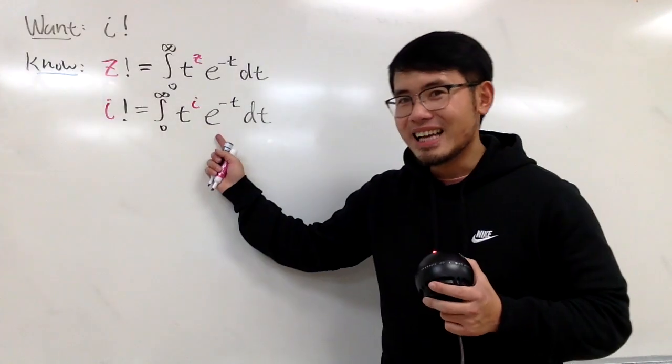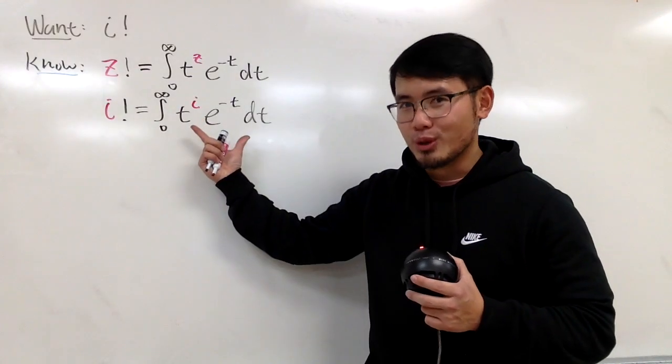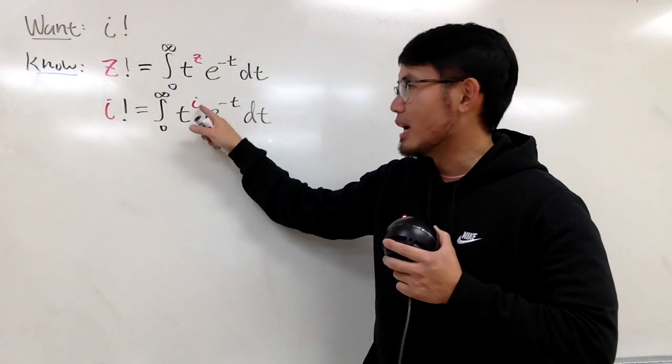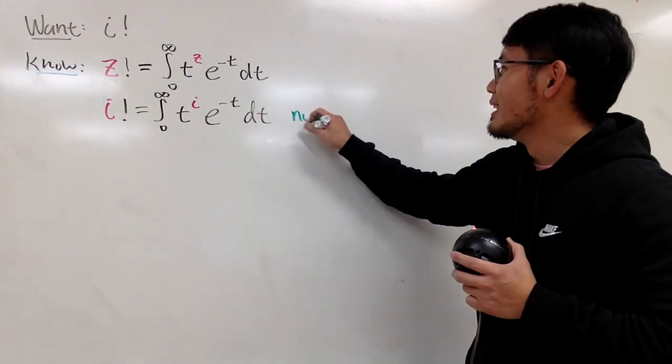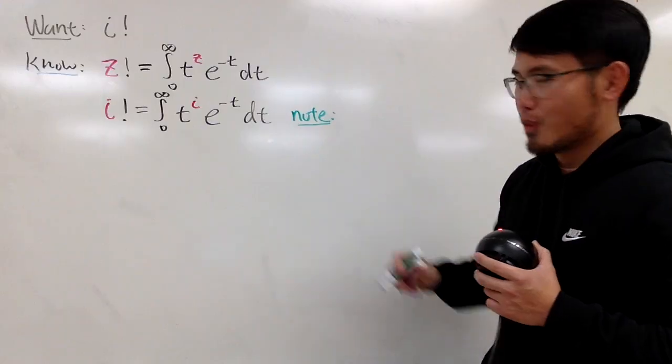However, though, this is not only an improper integral, but also complex, because we have t to the i's power. So, how can we deal with this? Don't worry. Let me show you. Let me just write it down right here for you guys.